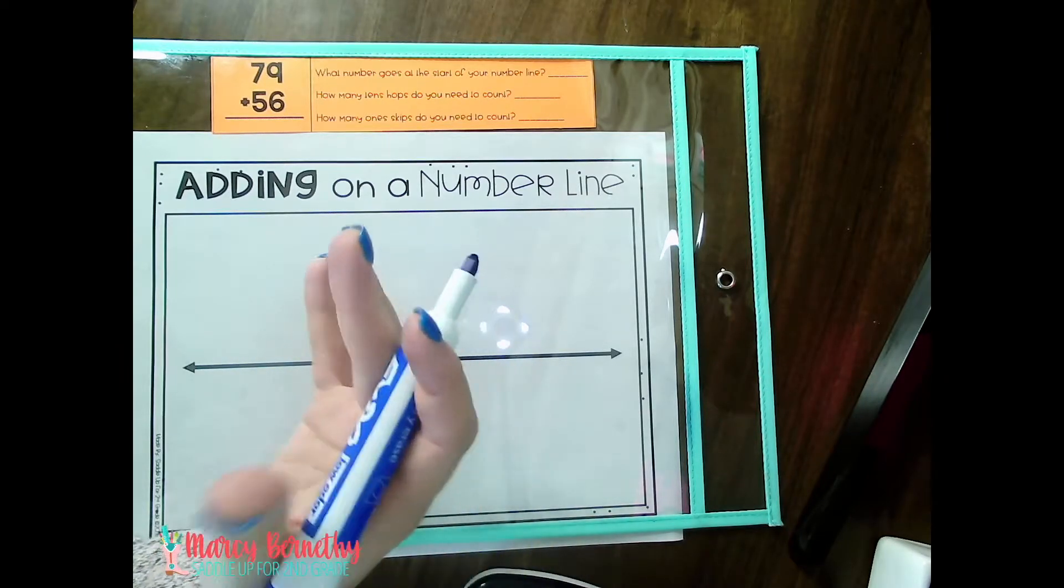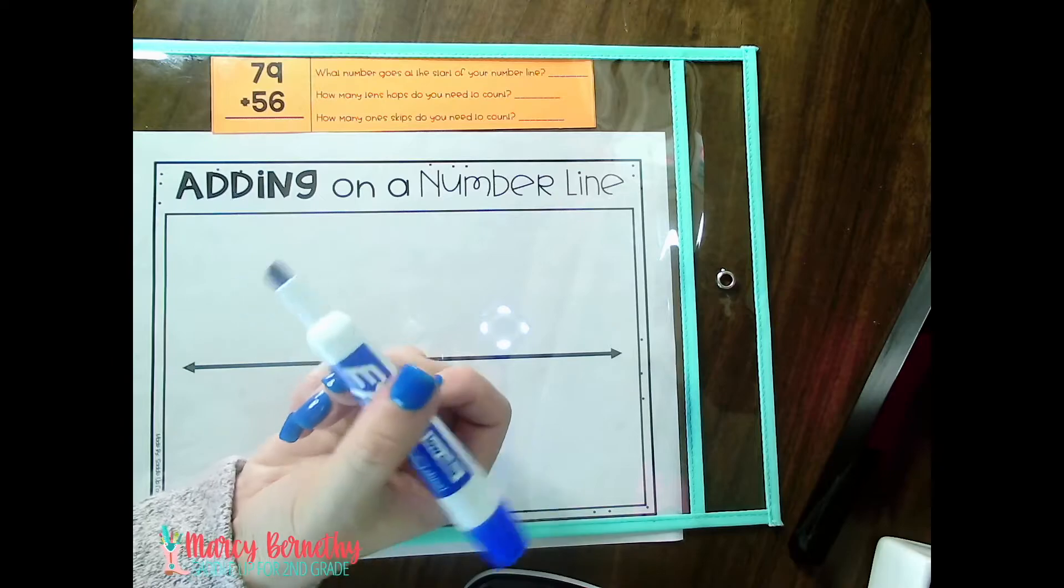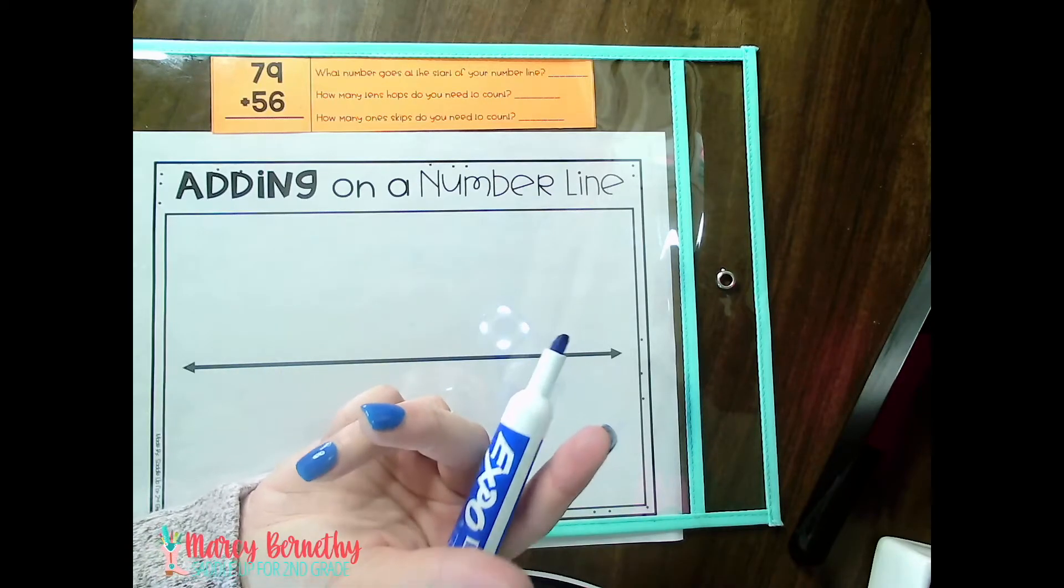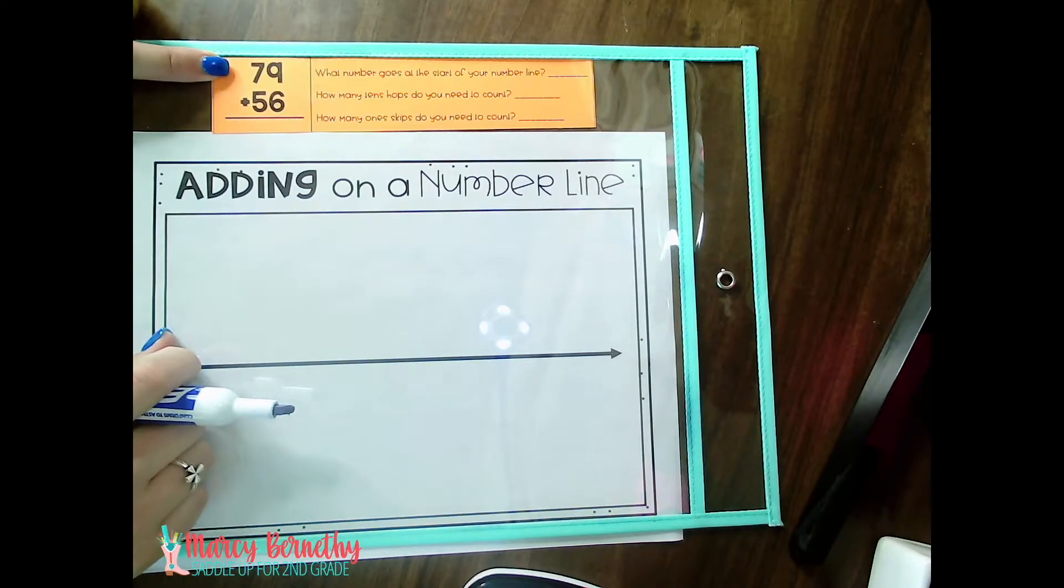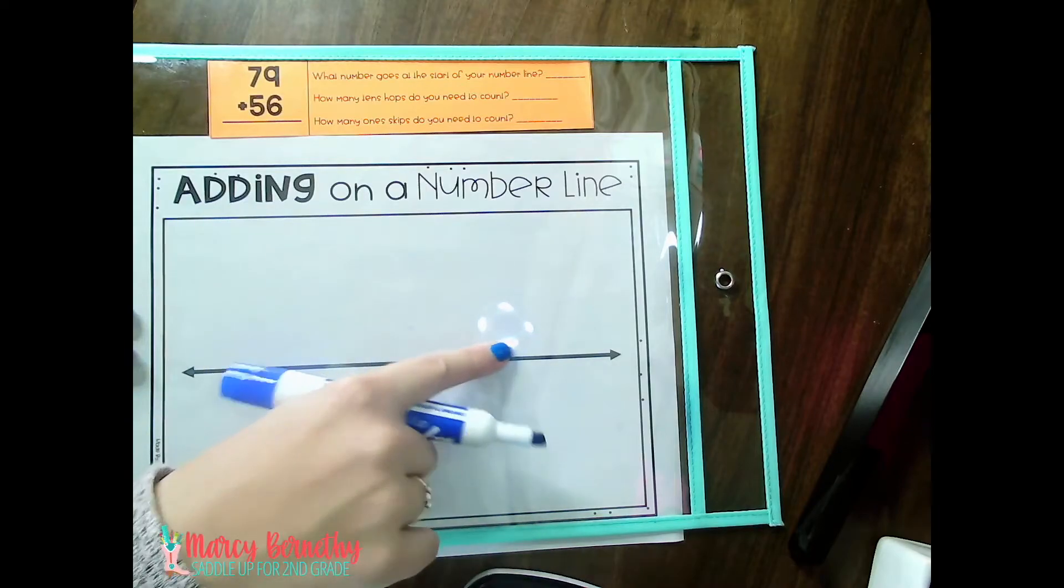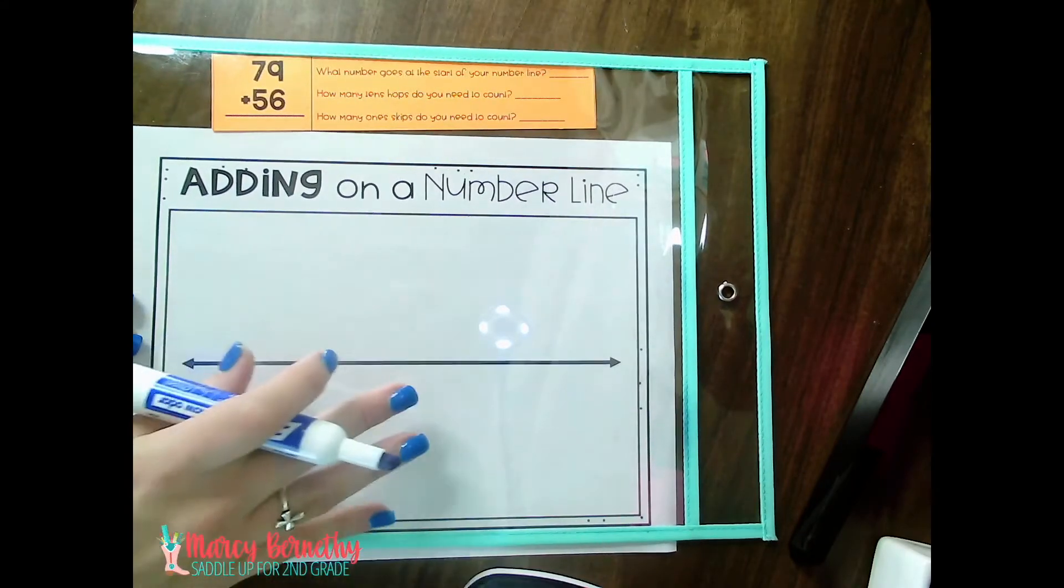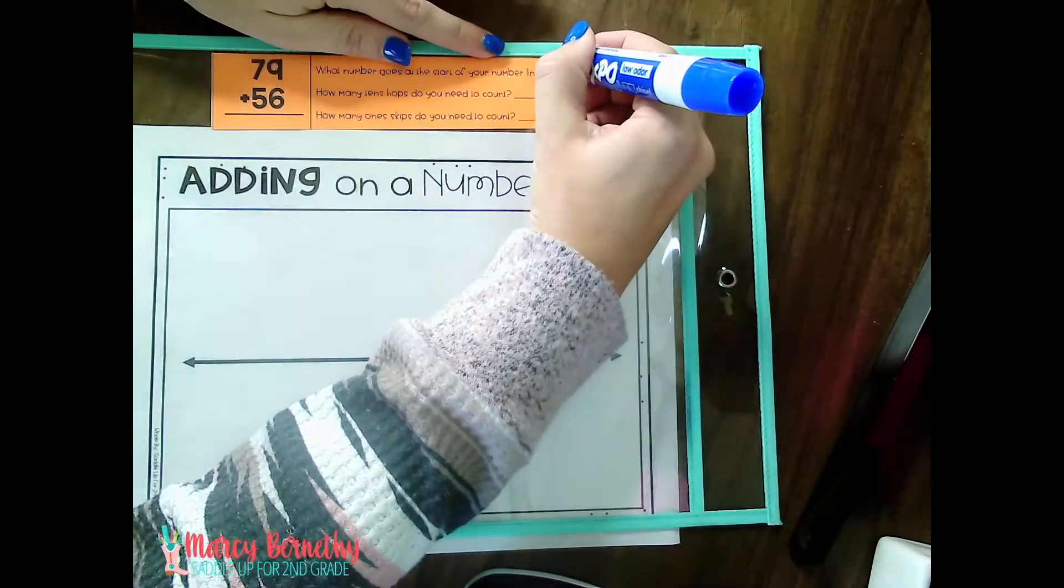So the first question I ask them is what number goes at the start of your number line? And what I like to tell my students is that it doesn't matter if they start with 79 or if they start with 56, because they should know by now that when you flip-flop the addends, your sum is still the same. So it really doesn't matter. But I like to tell them to write the largest addend first. So it doesn't matter the order of the problem. Write the largest addend first. That way, the number that they're modeling on the number line, it's the smaller one. And so it just requires less room. So what number goes at the start of your number line? 79. So I would have them write that out.